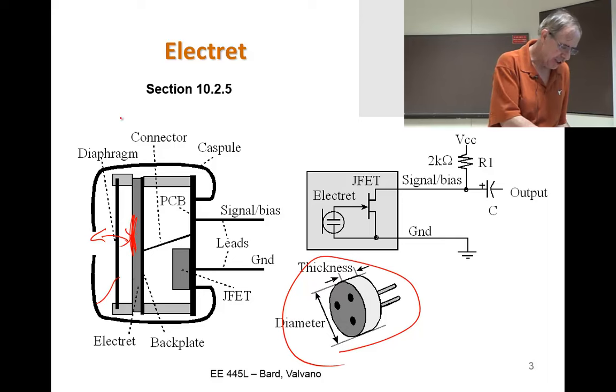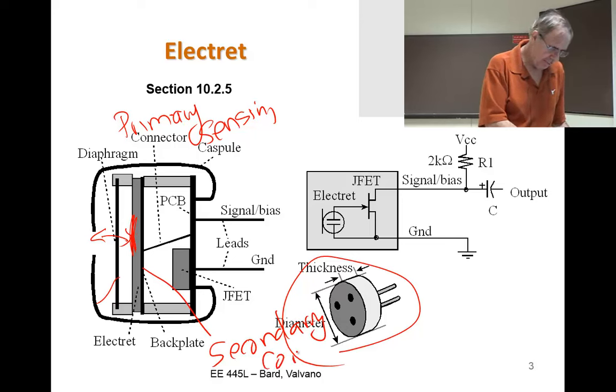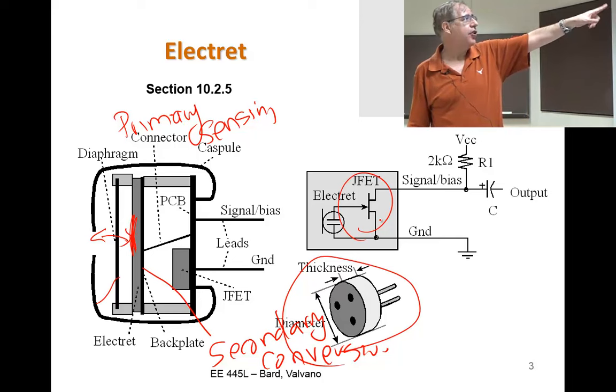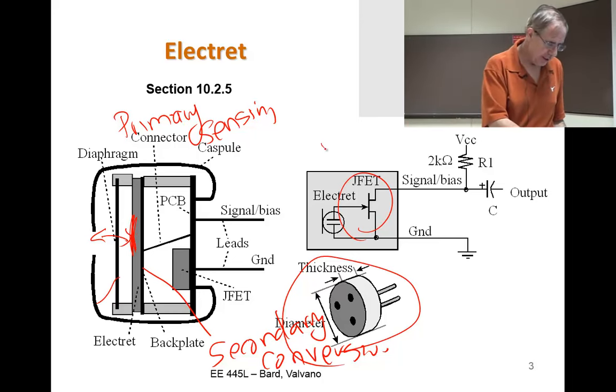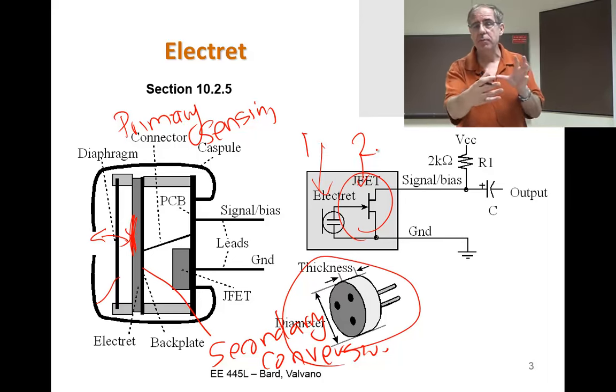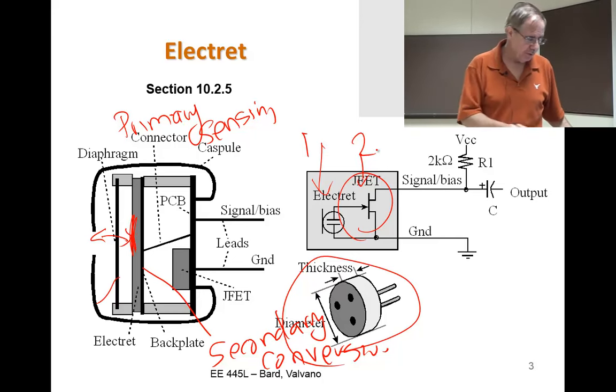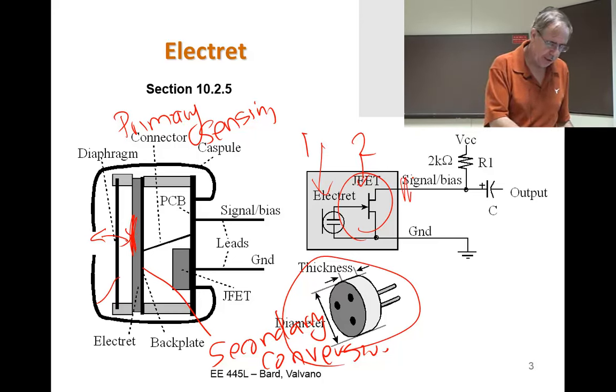So this is what's called a primary sensing unit, and then this is the secondary conversion. So this is typical of a sensor to have a primary conversion. And what that will do is change the behavior of this JFET. The primary is the diaphragm and the secondary is the transducer, the transistor which is going to be a function, the conductance of that transducer will be a function of the displacement, which means that as this wiggles back and forth, this wiggles up and down in voltage.